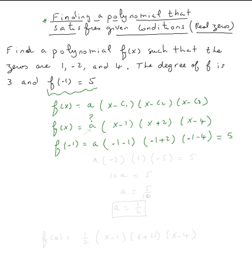What does this mean? This means a times, negative one minus one is negative two, negative one plus two is one, negative one minus four is negative five, and this equals five. Now, negative two times negative five is ten, so ten a equals five, which means a equals five over ten, which is one half.